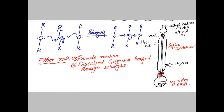The function of ether is: first, it acts as a medium; second, it acts as a solvation agent — it dissolves the Grignard reagent through solvation. When the chemical reaction happens between alkyl halide and magnesium to produce alkyl magnesium halide, it is a very reactive solid, so we keep it in diethyl ether to prevent its reactivity with oxygen or air.